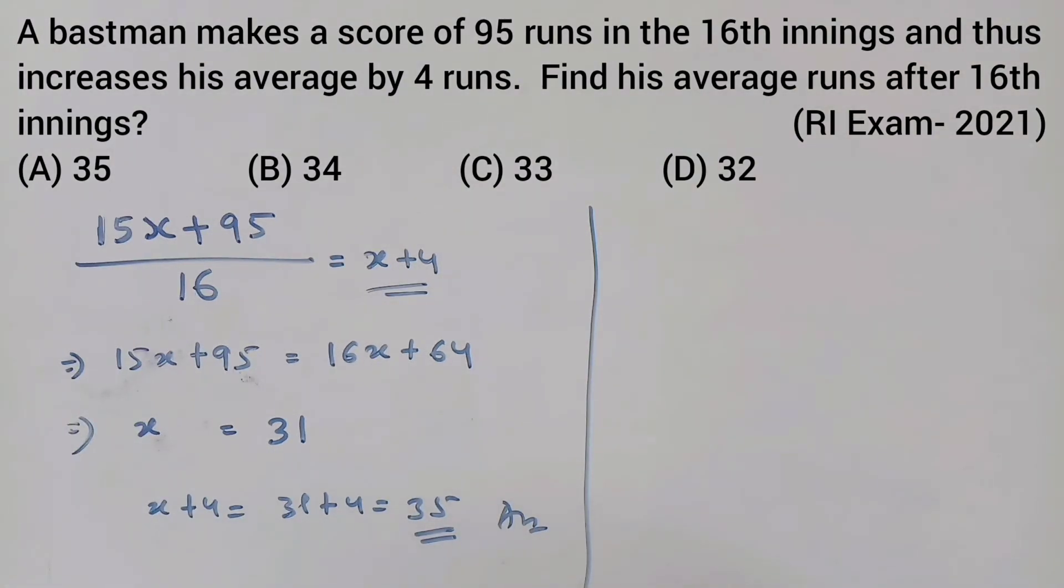A batsman makes a score of 95 runs in the 16th innings.